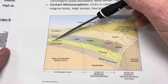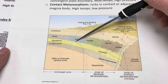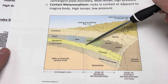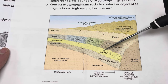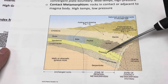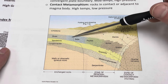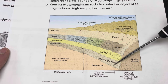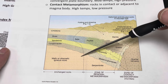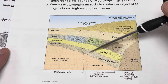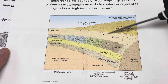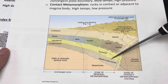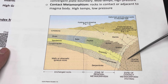The sandstone, as you get closer to the magma body and the heat source, has been changed into a metamorphic rock called quartzite. You can see that with some of these other rock names as well, which we'll get to. There's a whole host of rock names in this metamorphic zone adjacent to the magma body.